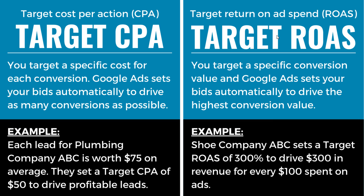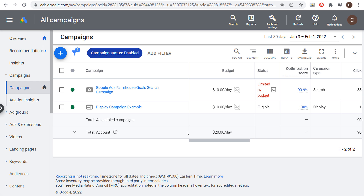Now target return on ad spend — you're targeting a specific conversion value, expressed as a percentage. For example, shoe company ABC sets a target ROAS of 300%, meaning they want to drive $300 in revenue for every $100 they spend on advertising. So let's come over to Google Ads and open up this search campaign.